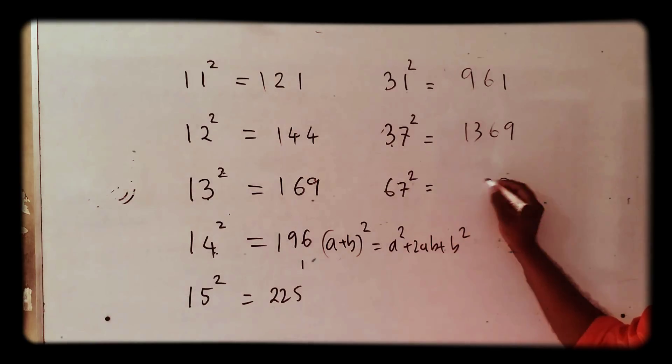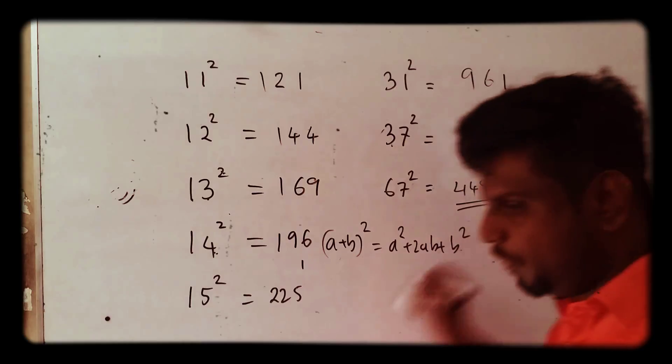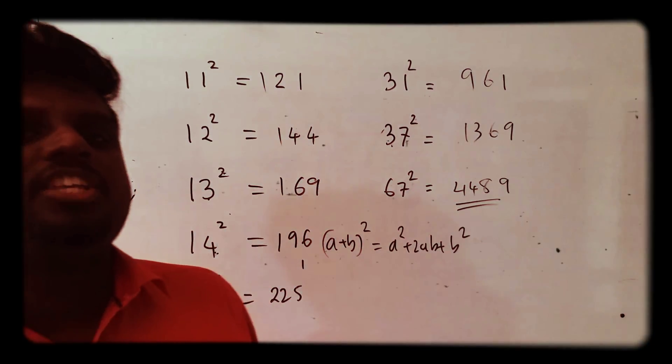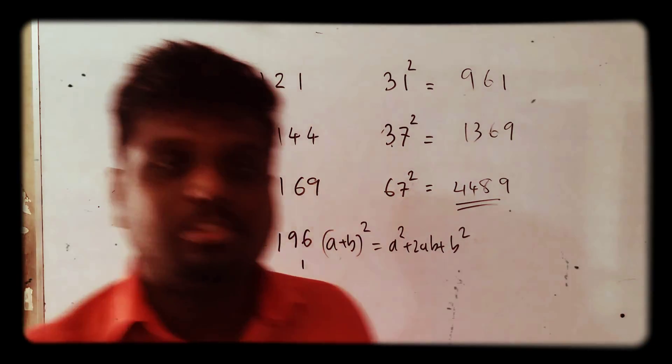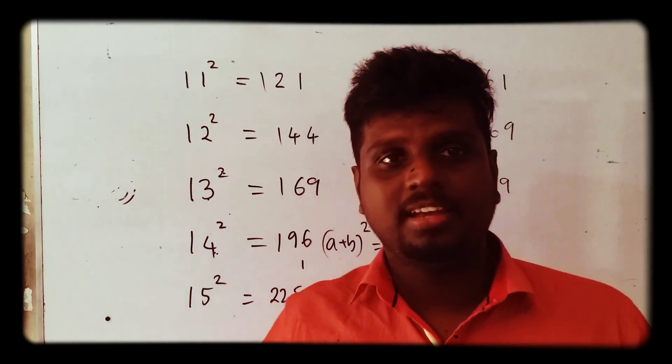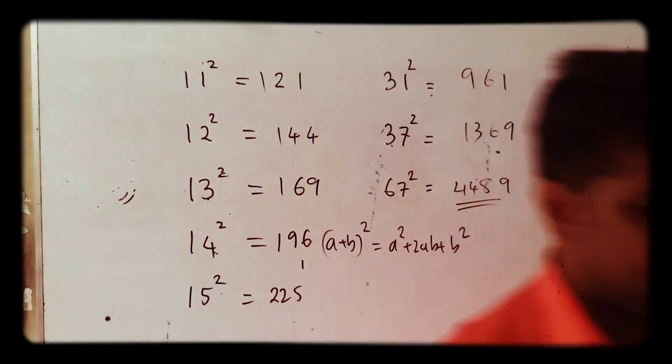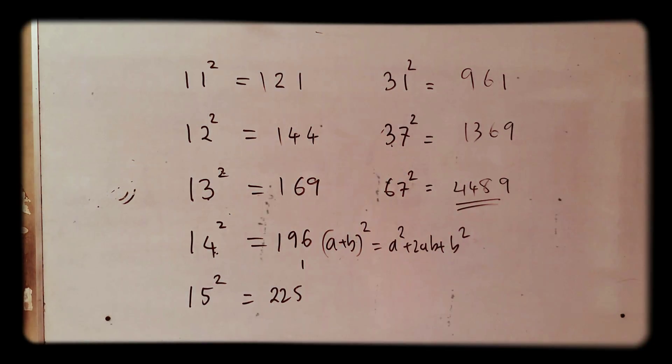67² you can put there as well - it's easy, you can put it as a small thing. So that's how to find the square of numbers easily. Let's see you try.